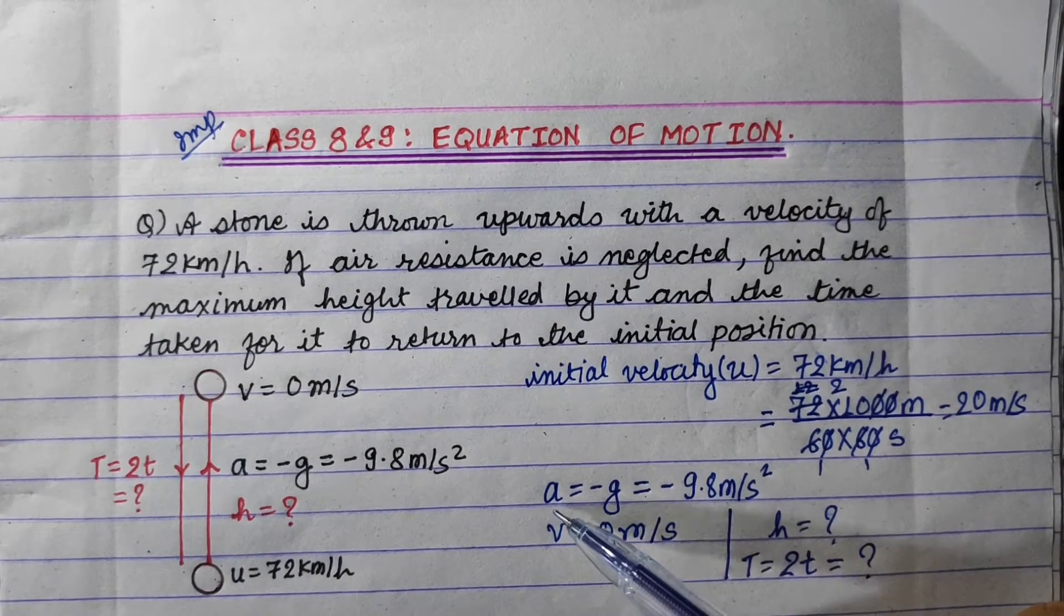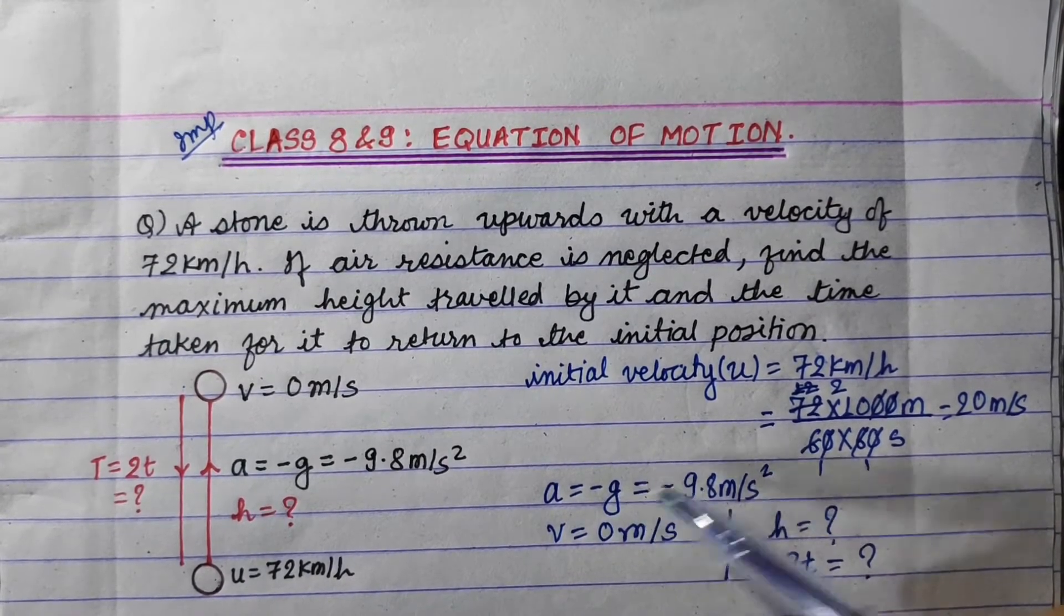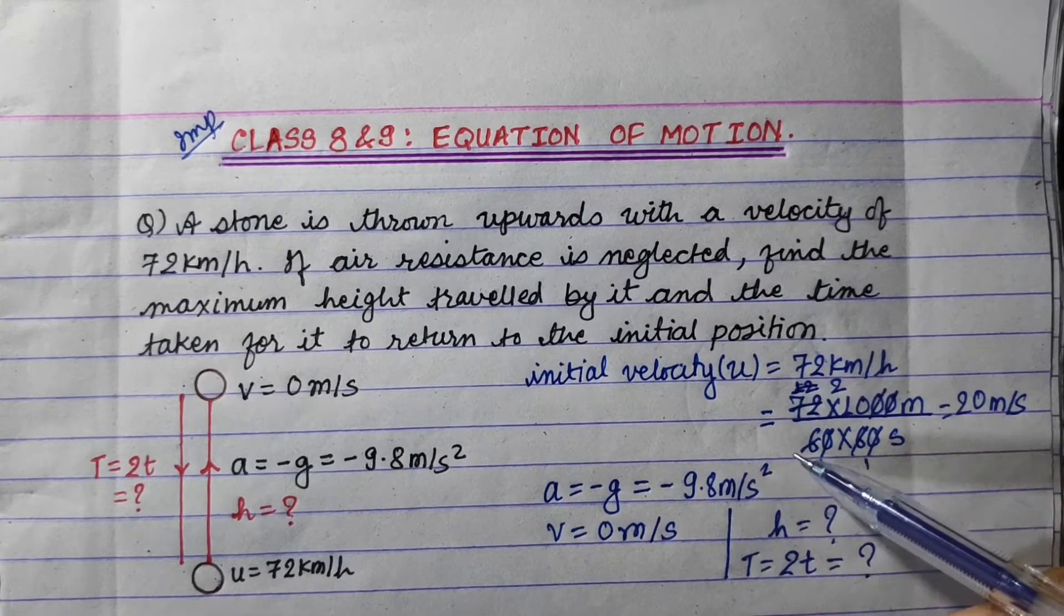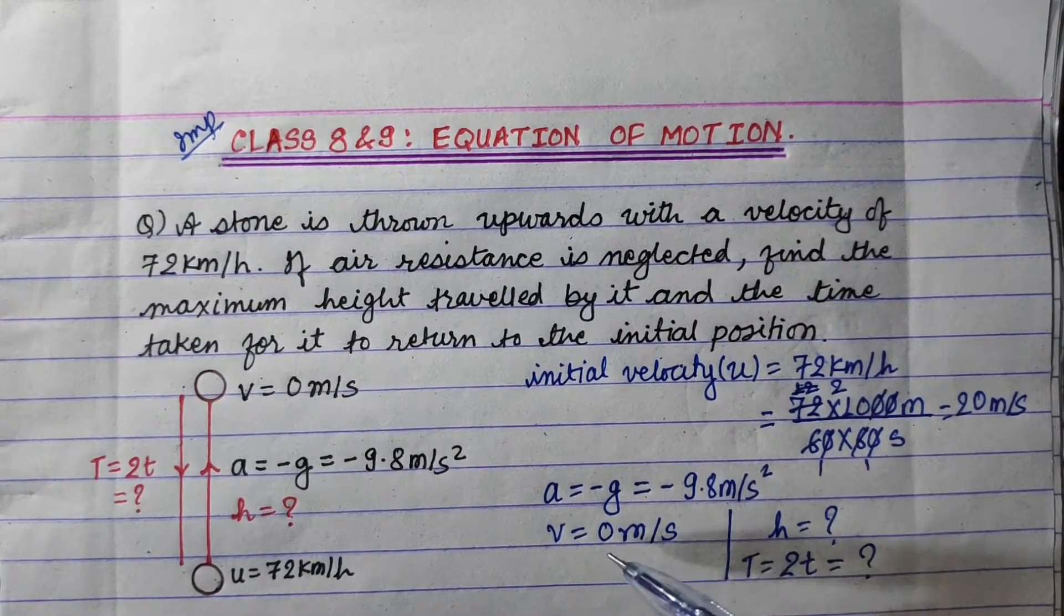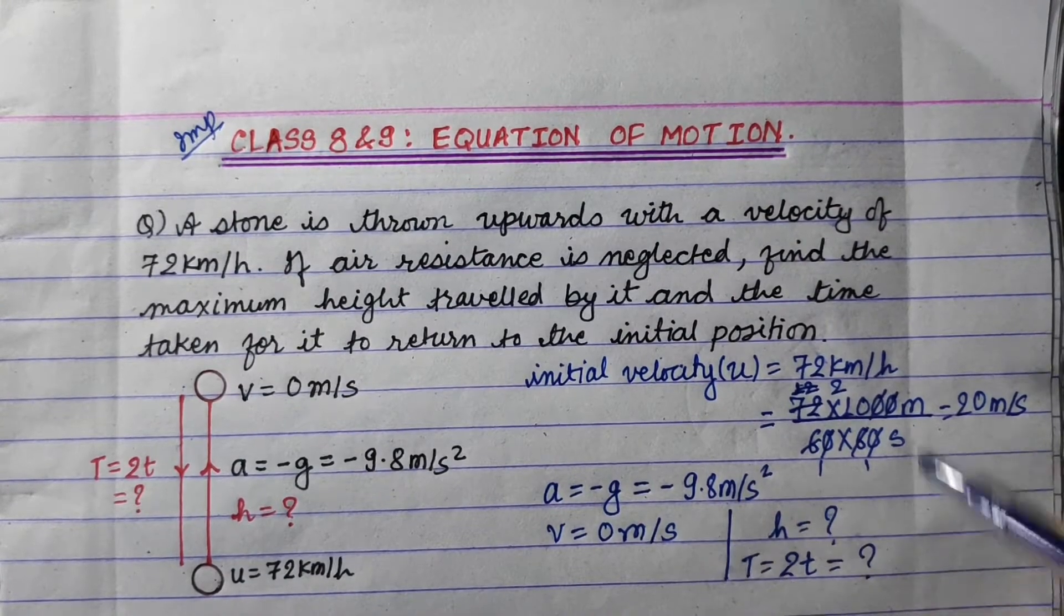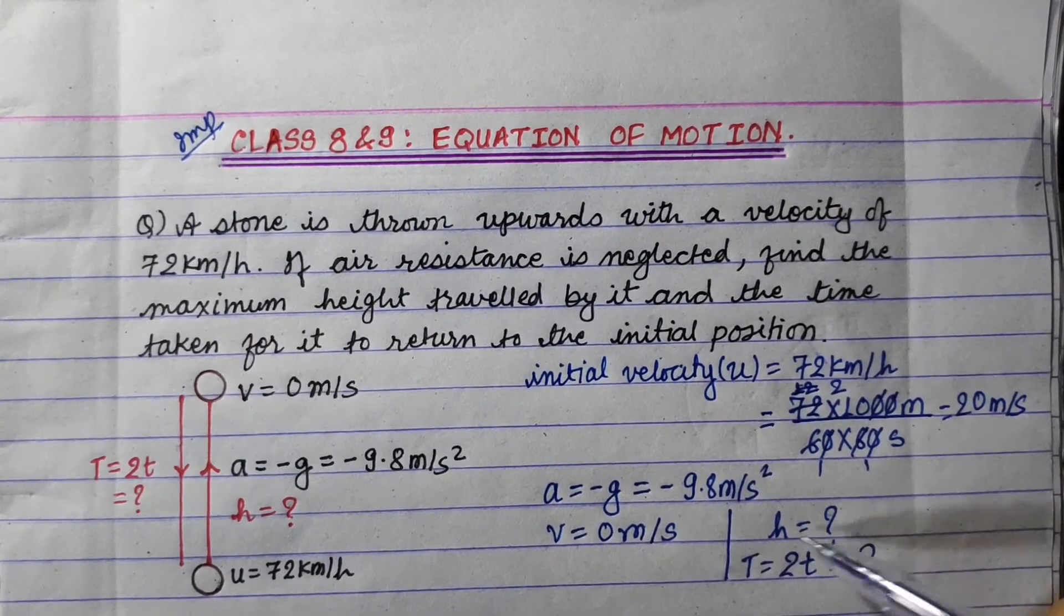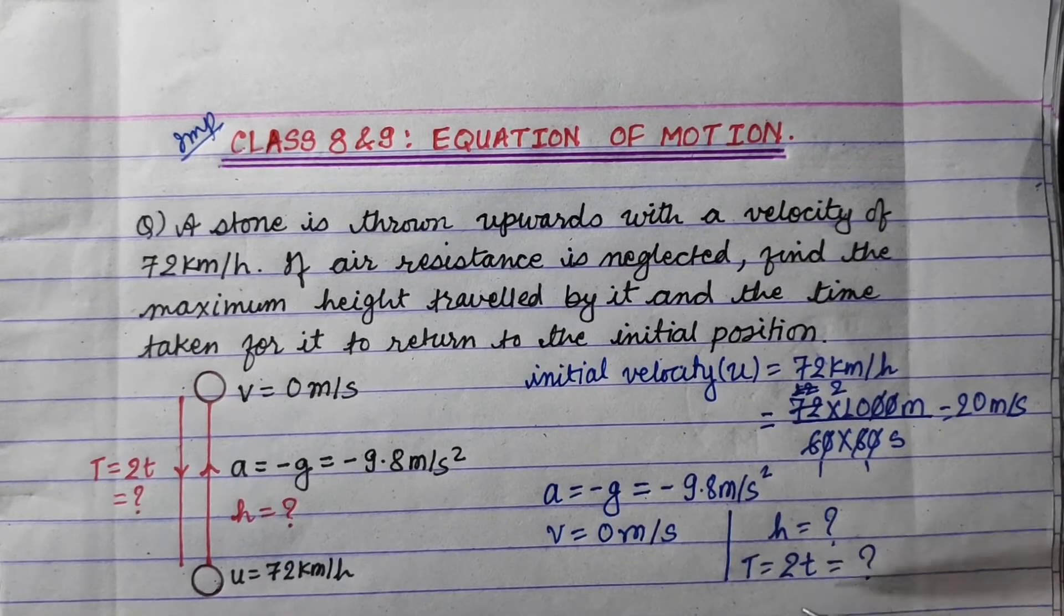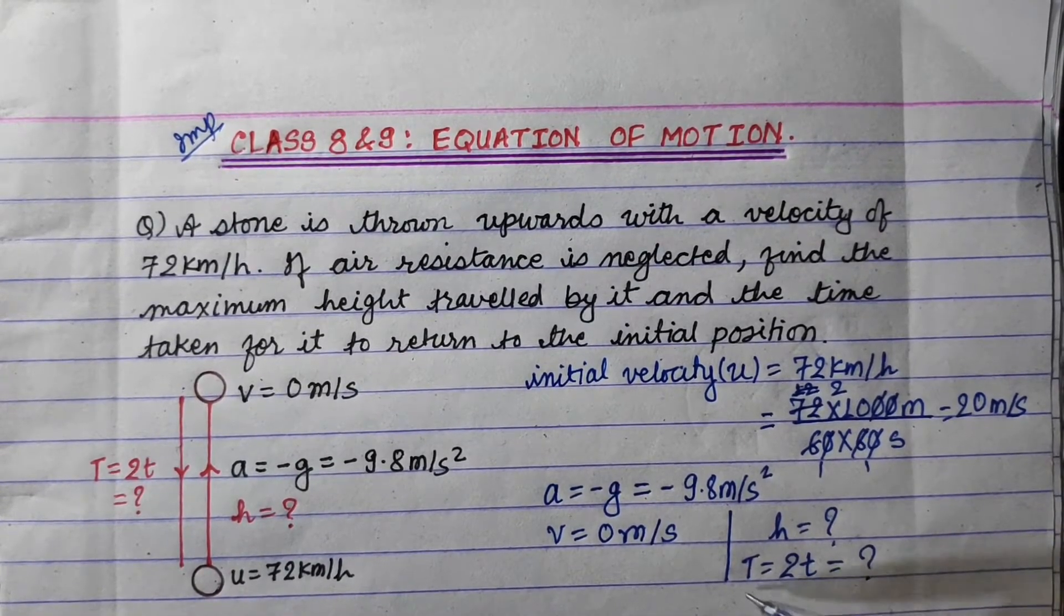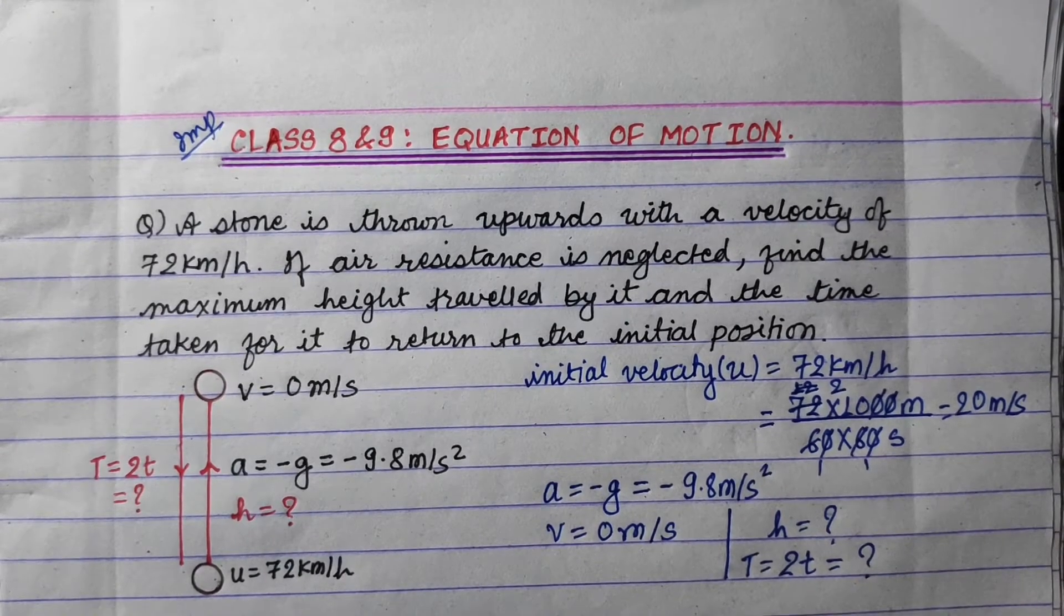Acceleration is negative, minus 9.8 meter per second squared. The final velocity is 0 meter per second. We need to find the maximum height and total time.